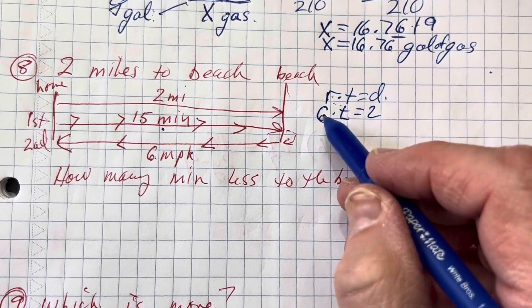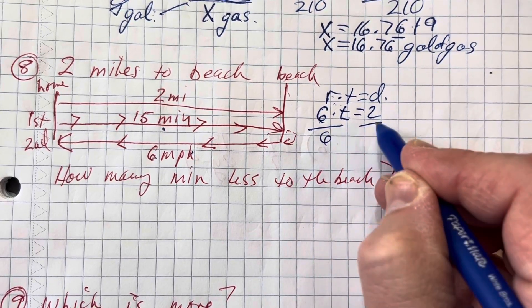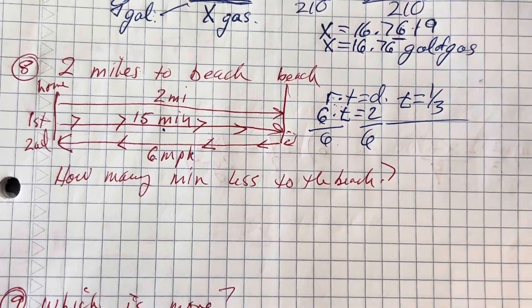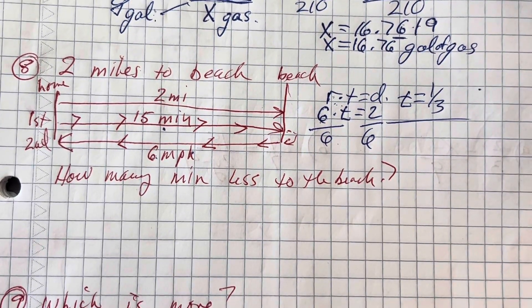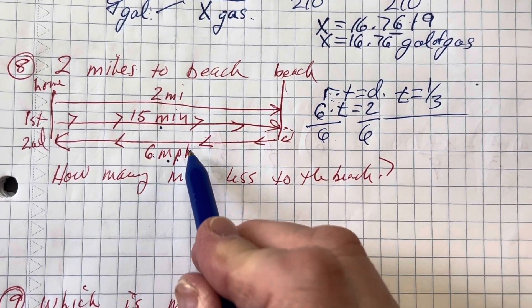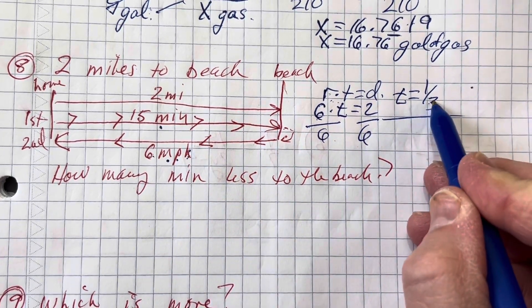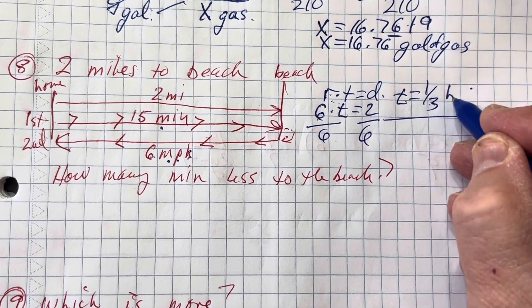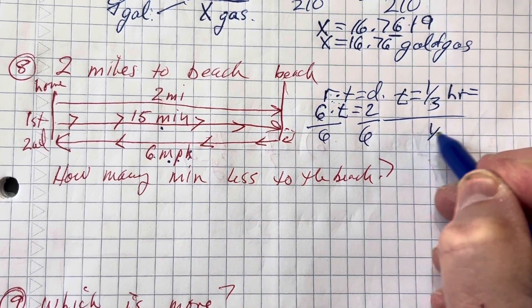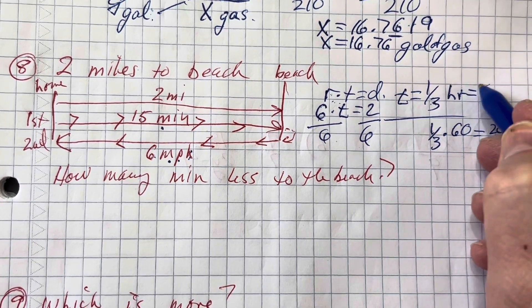Rate, I guess that'd be 6 miles per hour. The time, we don't know the time. The distance is 2 miles. Oh, that's pretty easy. 6 times T equals 2. I think I'm just going to divide both sides by 6. So T equals 1 third. Does that mean T equals 1 third of a minute? What does that mean? Well, this is miles per hour. This is an hour. This is a unit rate of hours. This is 1 third of an hour. 1 third of an hour is how many minutes? 1 third times 60 minutes equals 20 minutes.